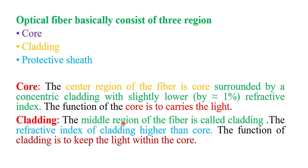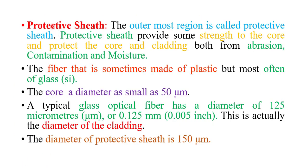The function of the core is to carry the light. Cladding: the middle region of the fiber is called cladding. The refractive index of the cladding is lower than that of the core. The function of the cladding is to keep the light within the core. The outermost region is called the protective shield. The protective shield provides strength to the core and cladding and protects both from abrasion, contamination, and moisture.